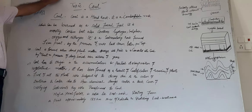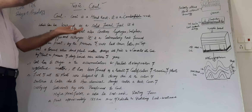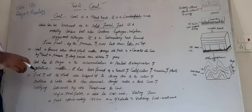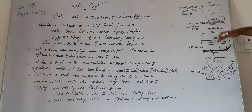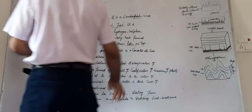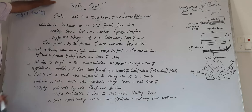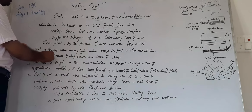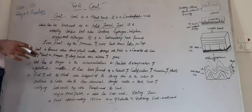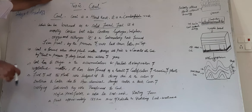Coal also contains some amount of hydrogen, sulfur, oxygen, and nitrogen. It is a sedimentary rock, which is formed from peat by the pressure of rocks laid down later on. When pressure is applied on peat due to overlying layers of rock, coal is formed when dead plant matter decays into peat and is converted into coal by heat and pressure deep below over millions of years.